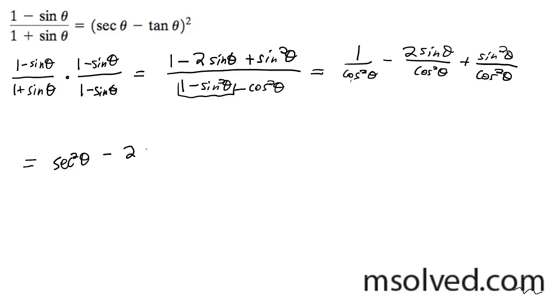And sine over cosine, one of the cosines is going to be tangent theta. And then just 1 over cosine squared theta is equal to the secant theta. And then sine squared over cosine squared is equal to tangent squared theta.